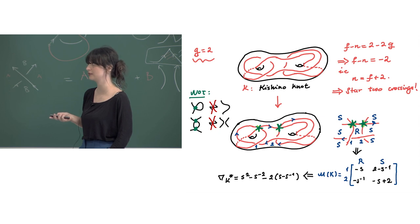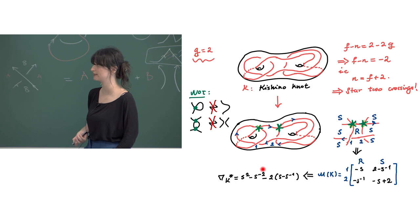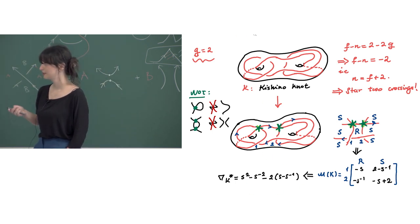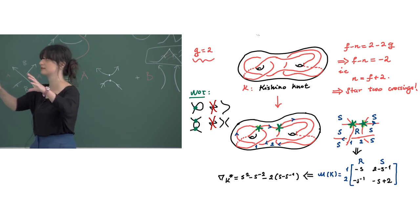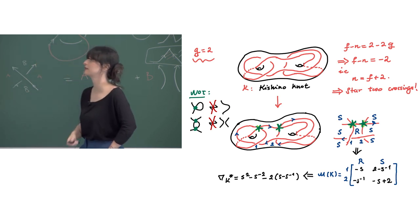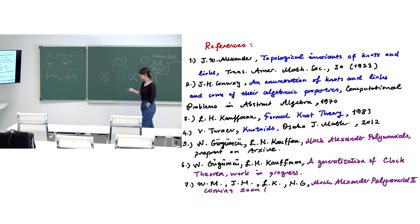For a linkoid diagram with two knotoid components, we can directly compute the state sum polynomial as the permanent of the incidence matrix without deleting any crossing or region. For the Kishino knot in a genus-2 surface, the number of crossings is two more than the number of faces, so we star two crossings and obtain the matrix and invariant polynomial. When crossings are starred, we forbid Reidemeister moves that delete or add a starred crossing — like punctures with strings attached that are not allowed to move.